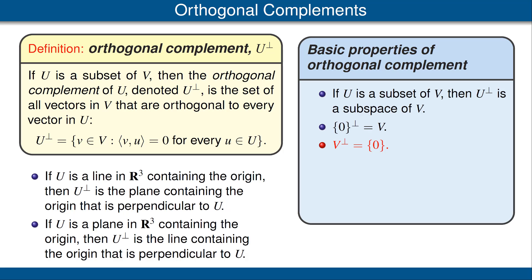The orthogonal complement of the entire vector space V is equal to the set consisting just of the additive identity 0. This property is a special case of the next property, which says that if U is a subset of V, then U intersect the orthogonal complement of U is contained in the set containing only 0. Notice that we are not requiring U to be a subspace of V, so U might not contain 0, which is why we have 'contained' here rather than 'equals.' The reason is that no vector can be orthogonal to itself except for the 0 vector. Taking U to equal the entire subspace V, we get the previous bullet point.